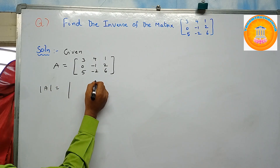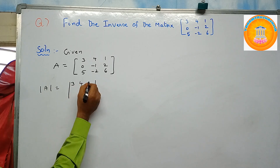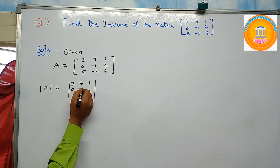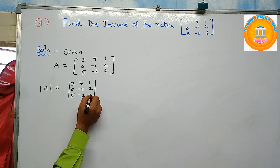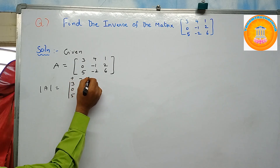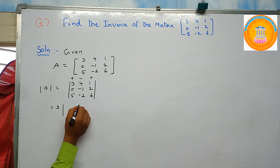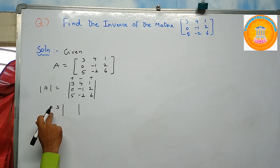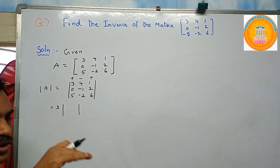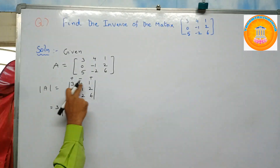The determinant of A — put these two vertical lines and write all nine elements: first row three, four, one; second row zero, minus one, two; third row five, minus two, six. Using the plus-minus-plus sign pattern, this equals three into the determinant of the values not in the first row and first column.